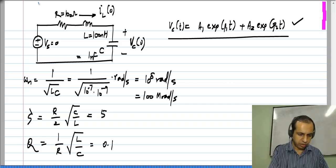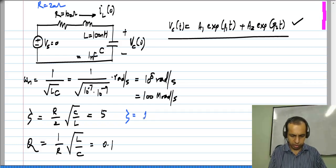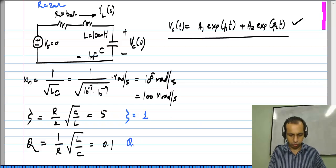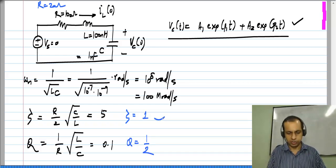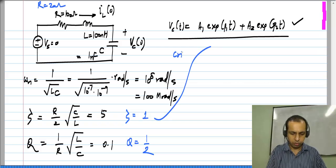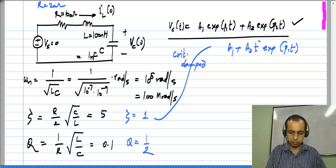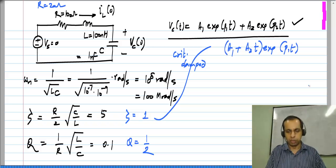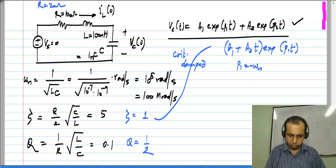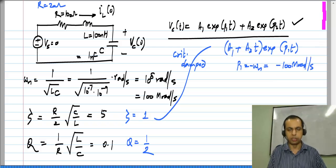So instead of this, let me take R to be 20 ohms. In that case zeta will be 1 and the quality factor will be half. This is critically damped, and the response will be of the type A_1 plus A_2 t exponential P_1 t. By the way, P_1 in this case will be equal to minus omega_n, which is minus 100 mega radians per second.